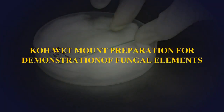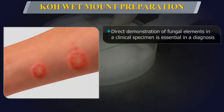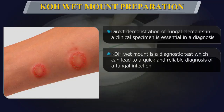Potassium hydroxide wet mount preparation is used for demonstration of fungal elements in clinical specimens. Direct demonstration of fungal elements is essential in establishing a diagnosis in a patient suspected of a fungal infection. When performed correctly, this diagnostic test can lead to a quick and reliable diagnosis.